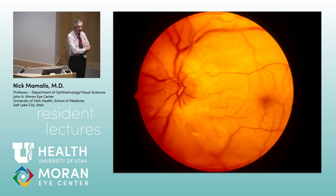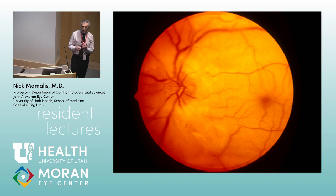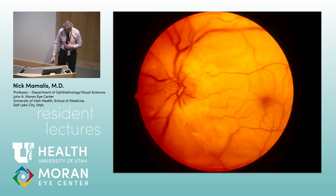Are retinal artery occlusions more embolic or thrombotic? More embolic. When you see a central retinal artery occlusion, work up the patient for clots — look at the carotids, the aortic arch, and the heart valves. These are usually more embolic. That's the classic central retinal artery occlusion.